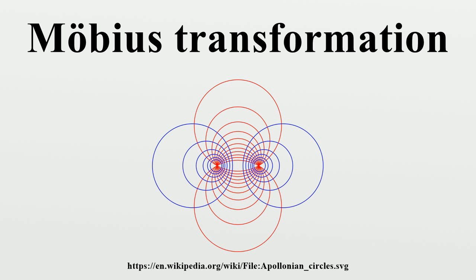These transformations preserve angles, map every straight line to a line or circle, and map every circle to a line or circle. The Möbius transformations are the projective transformations of the complex projective line. They form a group called the Möbius group, which is the projective linear group PGL. Together with its subgroups, it has numerous applications in mathematics and physics.